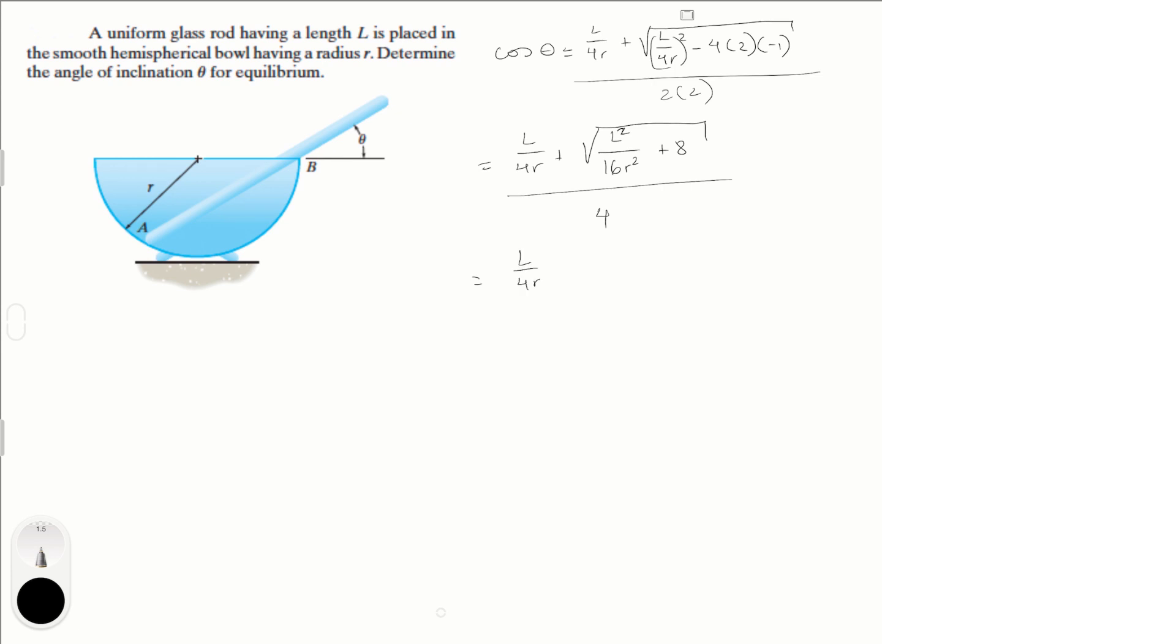L over 4R plus, this is L square plus 128R square all over 16R square. Hopefully you see what I'm doing. I'm trying to take some components out the root. All over 4.